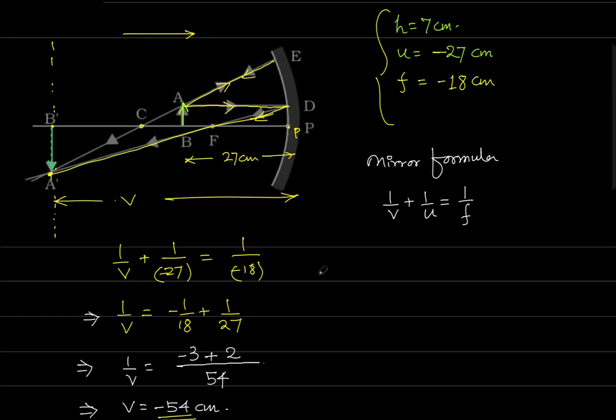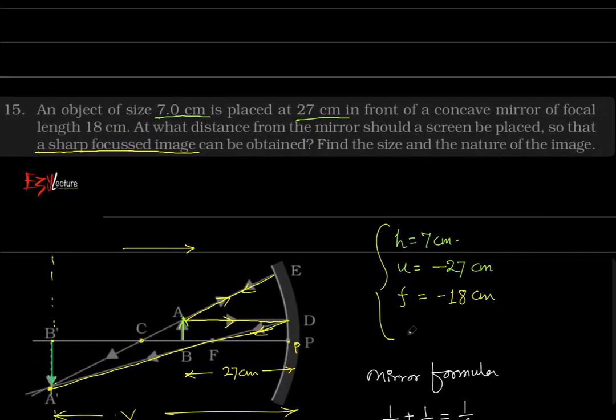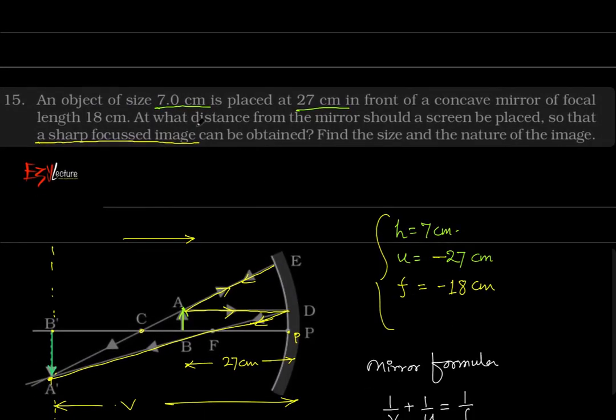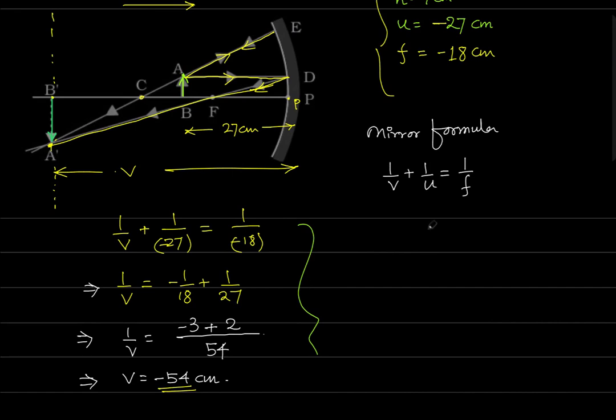The first part of the question asked: at what distance from the mirror should a screen be placed so that a sharp focused image can be obtained? At this distance, if we have 54 cm in front of the mirror, if we keep the screen, then we will get the sharp image of given object.